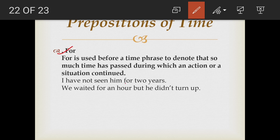The next preposition is 'for.' For is used before a time phrase to denote that so much time has passed during which an action or situation continued. For example, 'I have not seen him for two years' — two years of time has passed. Another example: 'We waited for an hour but he did not turn up.' The hour has passed and the situation continued up to that time, so to denote this we use the preposition 'for.'